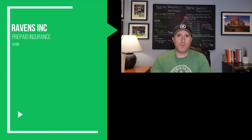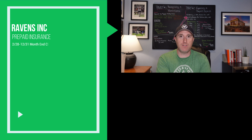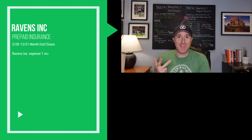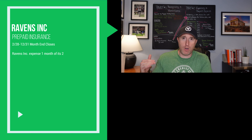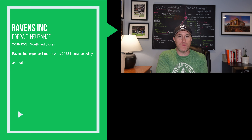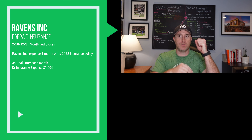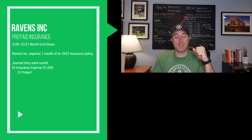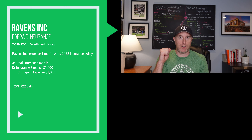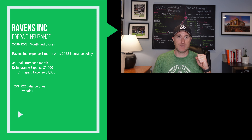We carry that $1,000 of expensing through the rest of the year — February, March, April, May, all the way through December. When we look at our financials in December, we've taken the $12,000 of prepaid insurance from our balance sheet and moved it completely over to the income statement, where it shows $12,000 of insurance expense. Our balance sheet reflects zero dollars of prepaid insurance.